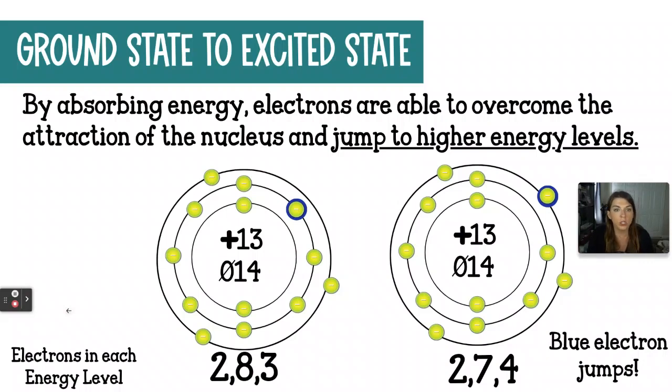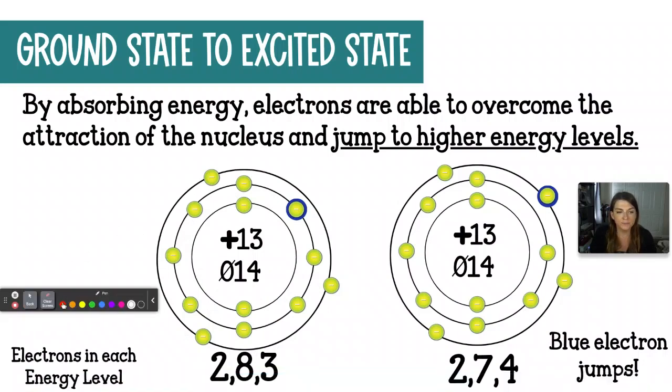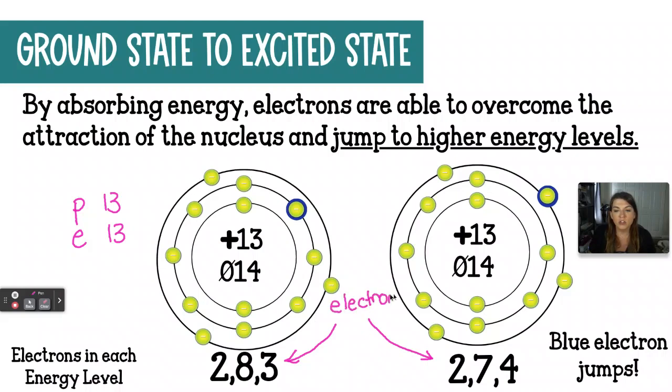In this case, we're looking at two different situations of aluminum. I know this is aluminum because we have a plus 13 written for the nucleus, which means there's 13 protons in there. Any atom with 13 protons is aluminum. So at first we're looking at an aluminum atom. And I know this is an aluminum atom because two plus eight plus three is giving me a total of 13 electrons. If I have 13 protons and 13 electrons, this is an atom of aluminum, electrically neutral.